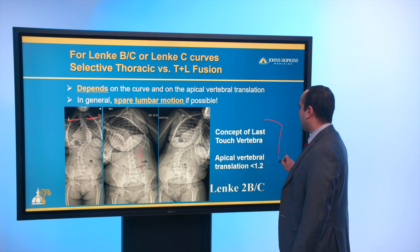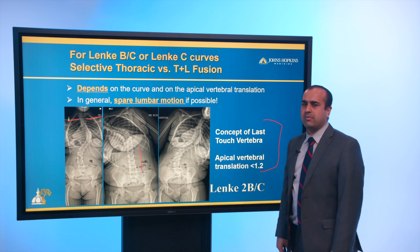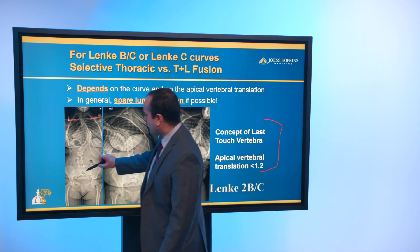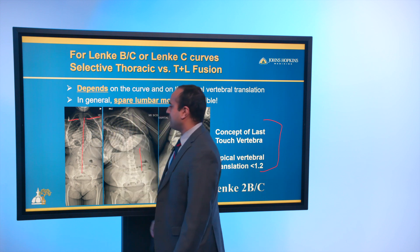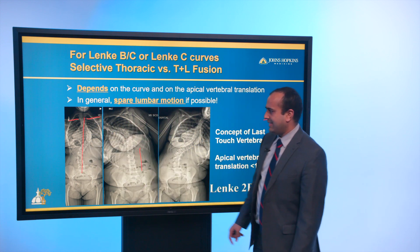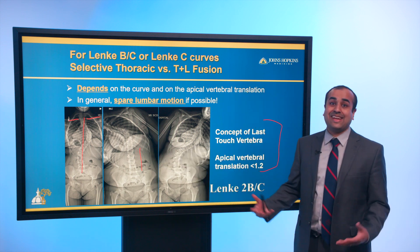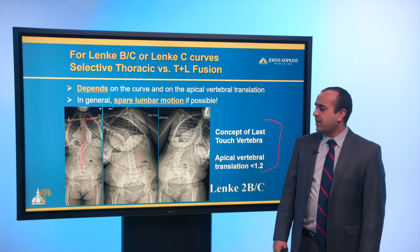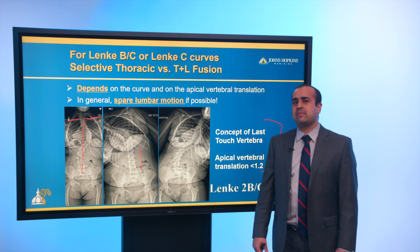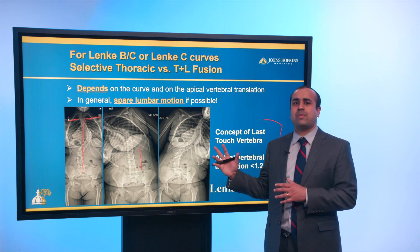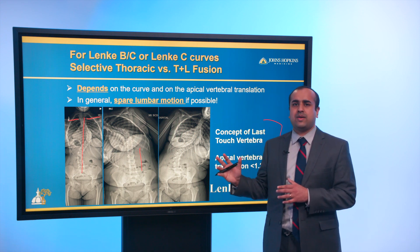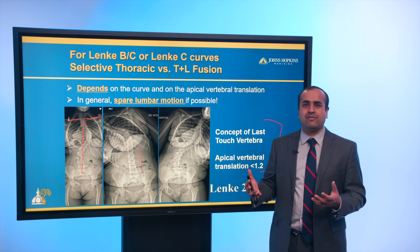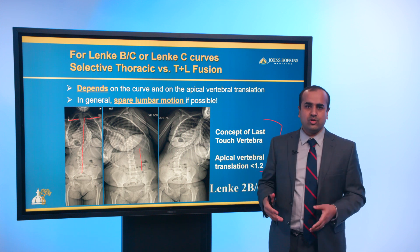Other important concepts are the last-touch vertebra and the apical vertebral translation ratio. The last-touch vertebra is essentially the relationship between the CSVL and the last vertebra touched by the CSVL. In this case, T12 and L1 are both substantially touched, so in my mind that's a good place to stop the fusion. The apical vertebral translation concept refers to the relationship between how much the apex of the thoracic spine is translated with respect to the lumbar spine, and that ratio can help guide whether you do a selective thoracic fusion or fuse the whole thing.